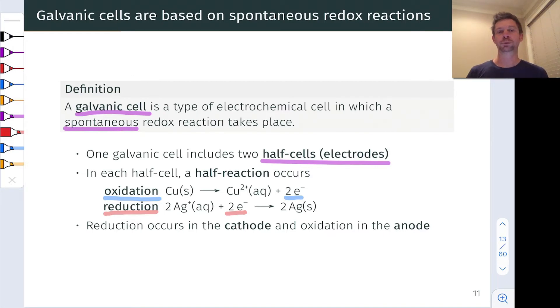Now, one more important definition before we move to the components of a galvanic cell: the cathode and the anode. These half cells are given special names depending on where reduction and oxidation occur. Oxidation, by definition, occurs in the anode. The anode is the electrode or half cell in which oxidation occurs. For example, in a copper-silver galvanic cell, the copper-containing half cell would be the anode.